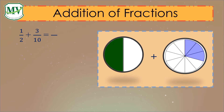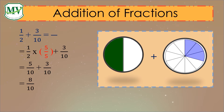We have to multiply 5 to 1 over 2 so that both denominators will now be equal. So, 1 times 5 equals 5, and 2 times 5 equals 10, which gives 5 over 10. Now that we already have the same denominators, we can add the fractions together. In adding fractions, add the numerator and copy the denominator. 5 over 10 plus 3 over 10 equals 8 over 10.